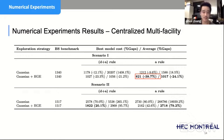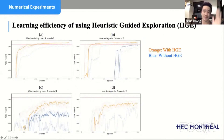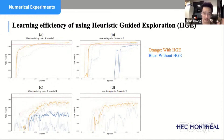To show that heuristic-guided exploration — like a teacher — is really useful, we show the learning curves. The orange lines are always higher compared to the blue curves and learn faster. This really shows that heuristic-guided exploration helps the learning to be faster and more stable.